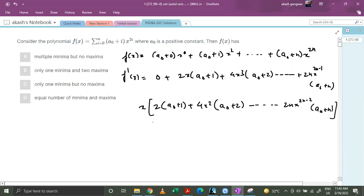Now we can see that this term is always positive because a₀ is positive as given in the question. And now these all are even powers, and we can say that this is always greater than or equal to 0. This is a positive term which is greater than 0. This is always greater than or equal to 0. So basically the entire term is always greater than 0.